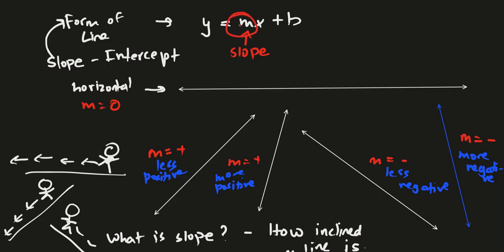So hopefully you understand what slope is, and that helps you understand what the m portion is in y equals mx plus b. Now let's look at b. The b is the y-intercept.